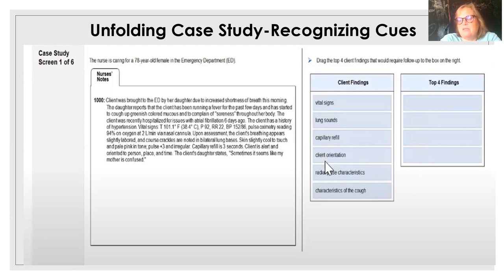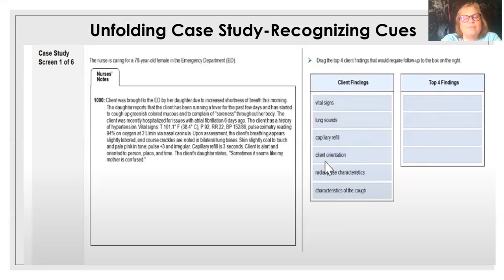She's got a fever, her heart rate is within the normal range, respiratory rate is just above normal, and blood pressure is elevated but she has a known history of hypertension. On assessment, the client's breathing appears slightly labored; she has coarse crackles in bilateral lung bases. Her skin is slightly cool to touch and pale pink in tone. Pulse is 3+ and irregular — but we know she has a history of AFib. Capillary refill is three seconds. She's alert and oriented to person, place, and time, though her daughter says sometimes it seems like her mother is confused.